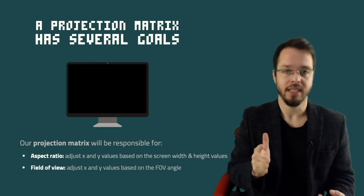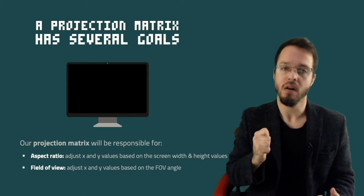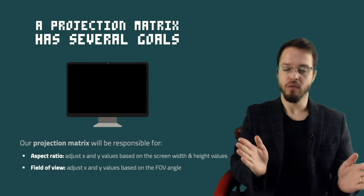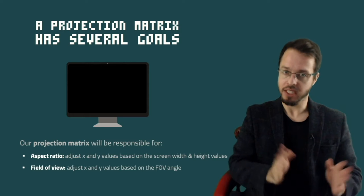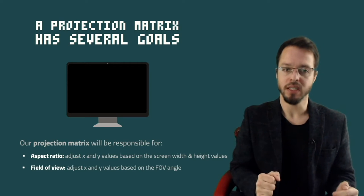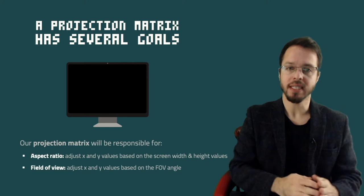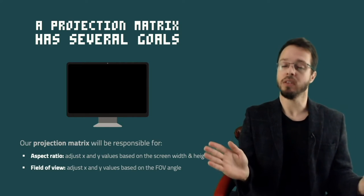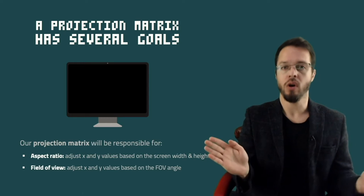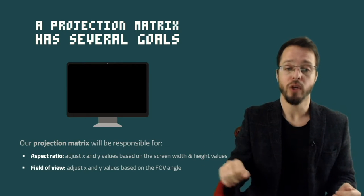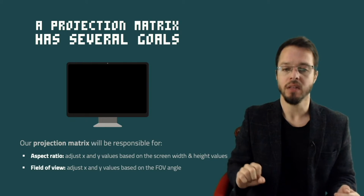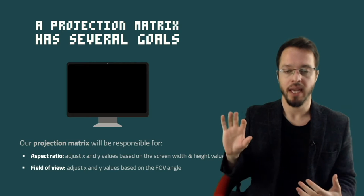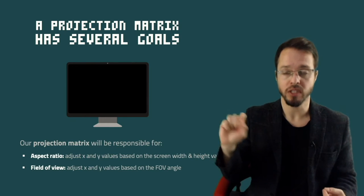The second task is to take into account the field of view — the angle of opening. If we're talking about perspective projection, we have this angle of opening which determines how much we perceive of the objects in front of us. Is it 60 degrees? Is it 90 degrees? We're going to see less or more of the objects based on this field of view angle. We're going to adjust the x and y values based on this field of view angle, and our perspective projection matrix is going to help us do that.